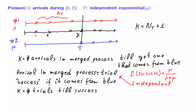So what we are looking at is a random variable K, which is the number of trials until the first success in a sequence of independent trials, where each trial has success probability mu/(lambda + mu). We know what that distribution is: it is geometric with this parameter. This gives us the PMF of K. Once we have the PMF of K, we shift it by 1 to the left to get the PMF of N_T. The number of arrivals during an exponentially distributed time interval follows a geometric distribution, shifted by 1.